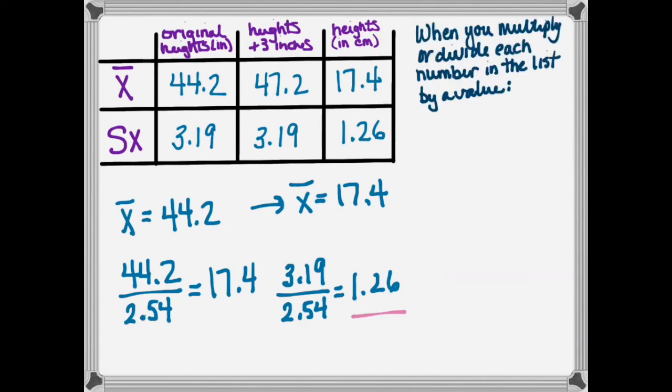Let's write a rule here. When you multiply or divide each number in the list by a value, the new mean is equal to the old mean times the value, or the new mean is equal to the old mean divided by the value.